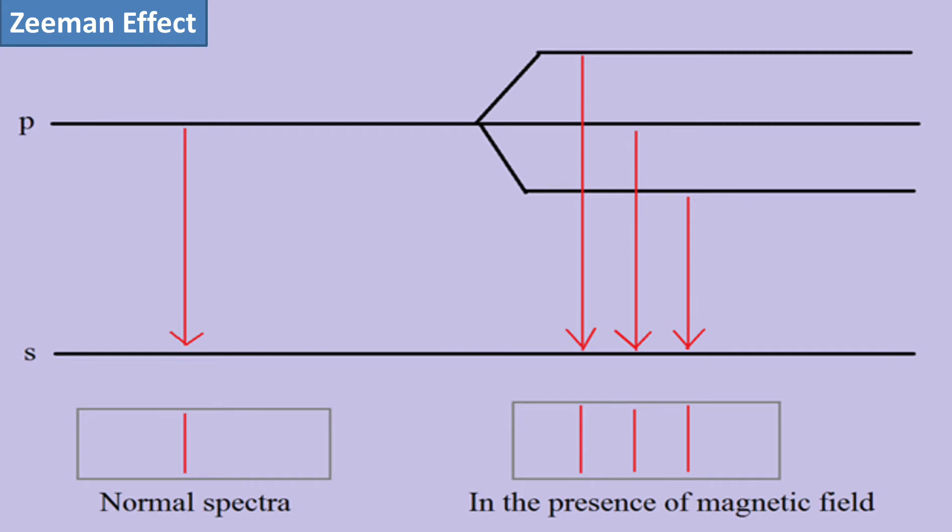Pieter Zeeman observed that these spectral lines undergo splitting when the atom is kept in the presence of an external magnetic field. The Zeeman effect is the result of the interaction between the magnetic moment of the atom and the external magnetic field.